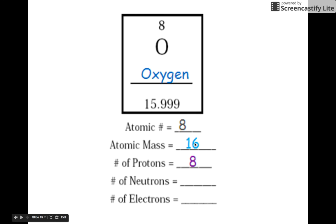So that's atomic mass. The number of protons is going to be 8. The number of neutrons is going to be the atomic mass minus the protons, which is also 8. And the number of electrons matches the number of protons, which is 8.